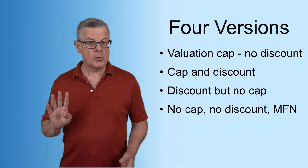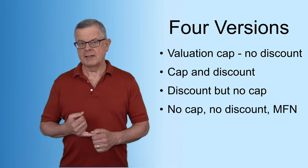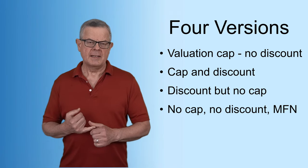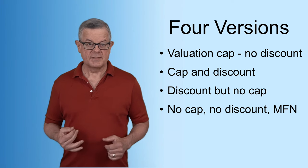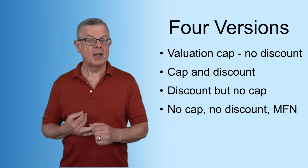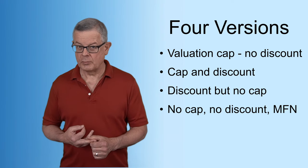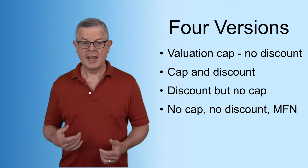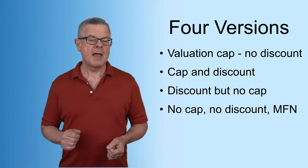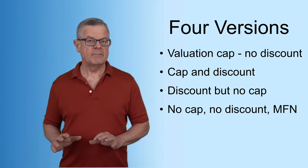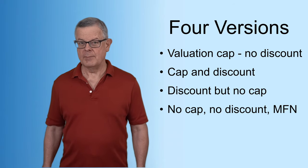There are actually four different versions of the SAFE. The first one is called the standard SAFE, and it has a valuation cap but no discount. The second has a valuation cap and a discount. The third version has a discount but no valuation cap. And the fourth version has no cap and no discount, but it has an MFN — a most favored nation clause. We'll get into that more in a minute.